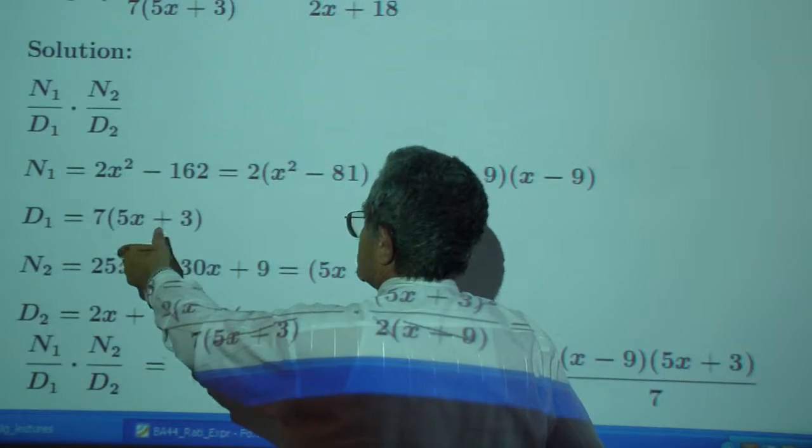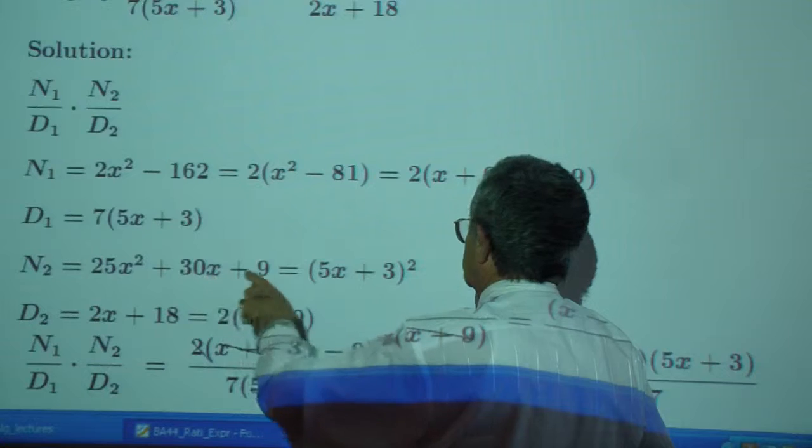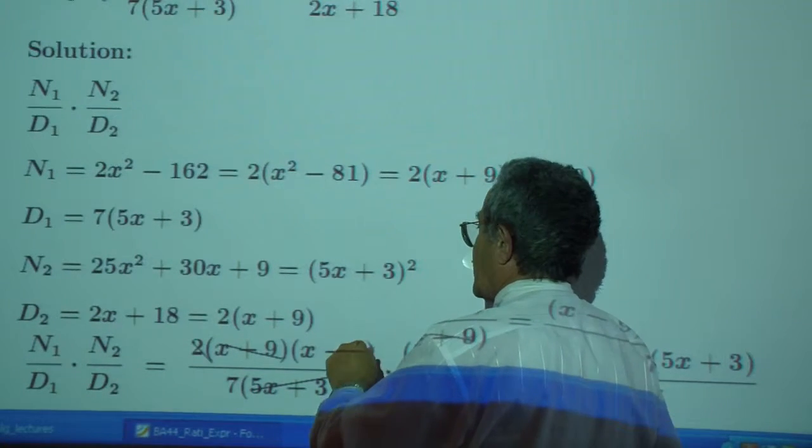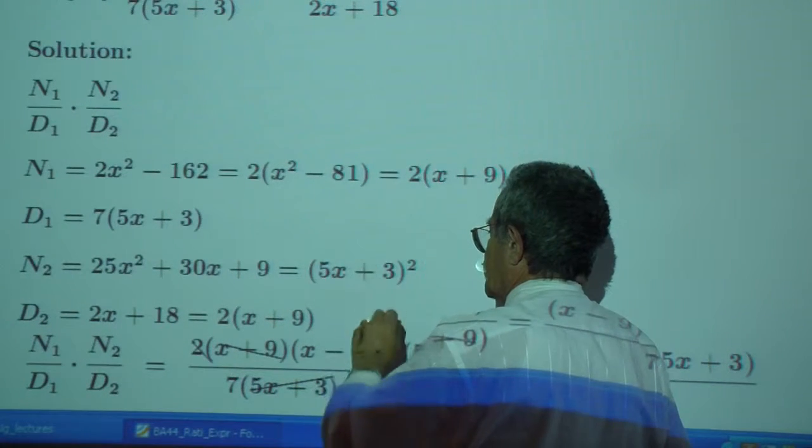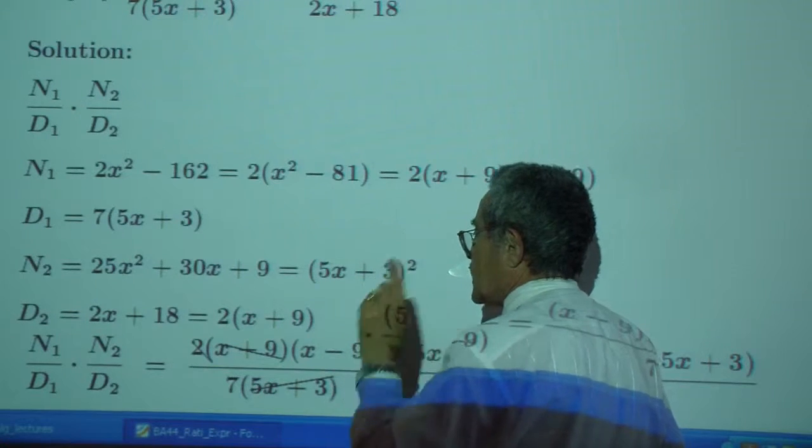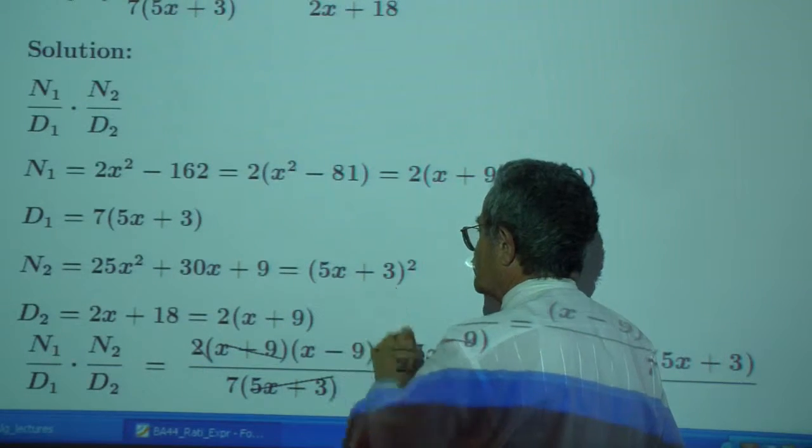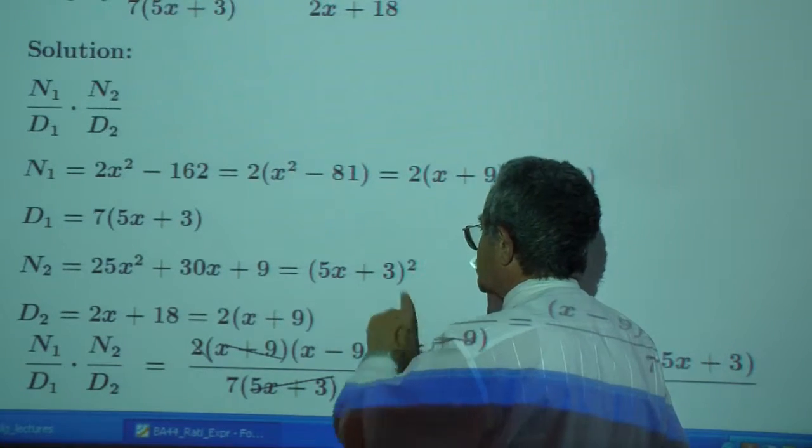The bottom, you just factor out the 7. Numerator 2, that's a perfect square. 5x quantity squared, 25x squared, plus the double product. 2 times 5 times 3, which is 30x plus 3 squared.